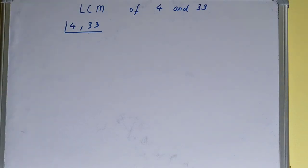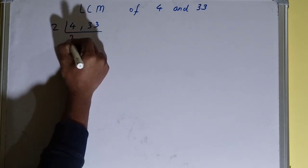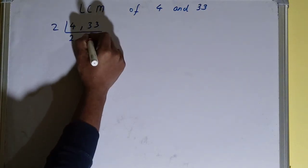So even if one of the numbers is divisible, we divide. Divide this 4 by 2, which will give us 2. And this 33 is not divisible by 2, so we'll not touch it, we'll leave it like that.